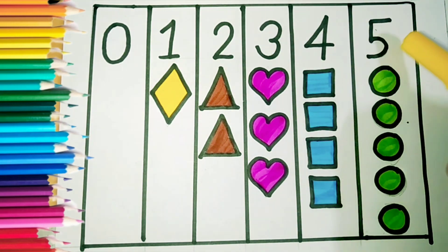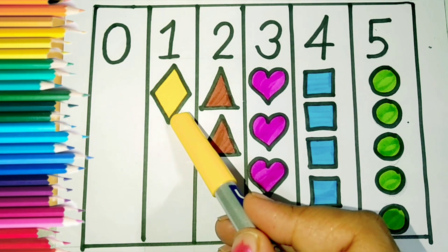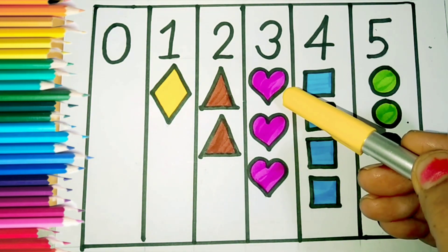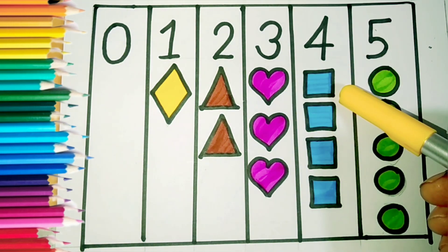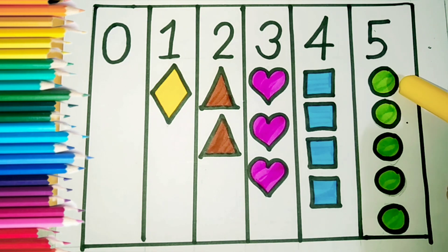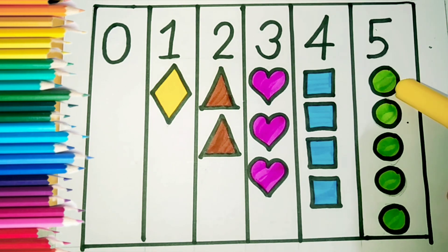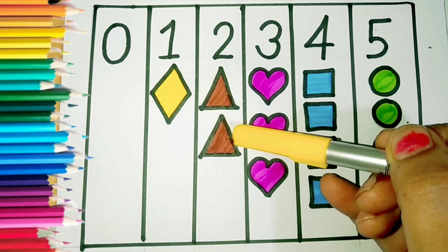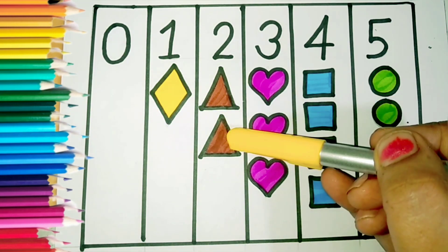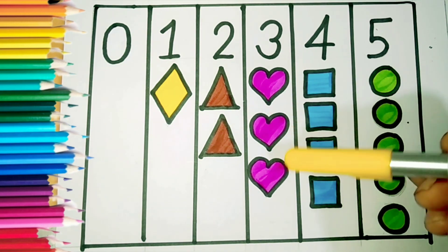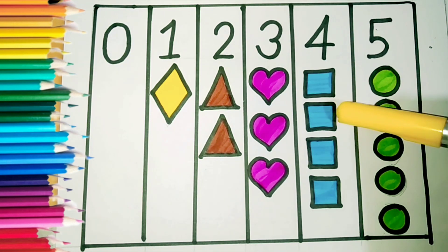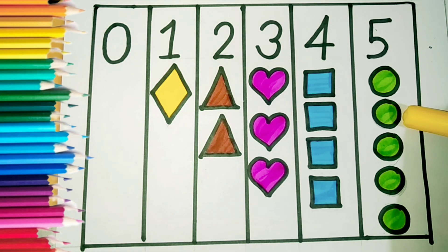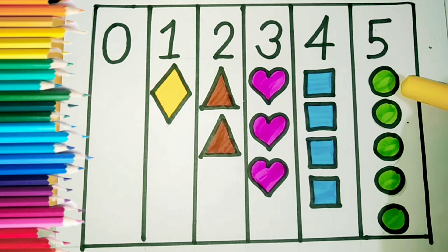Four and five. We have one diamond, two triangles, three hearts, four squares, and five circles. One, one, one is diamond. Two is triangle. One and two, triangle. One, two, three, heart. One, two, three, four, square. One, two, three, four, five, circle.